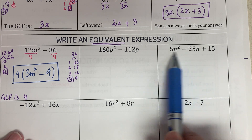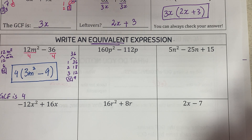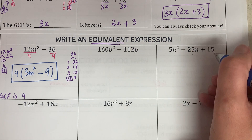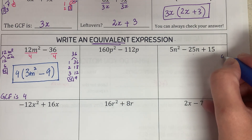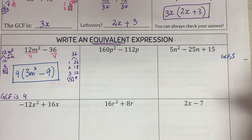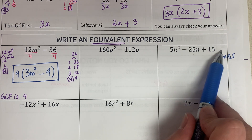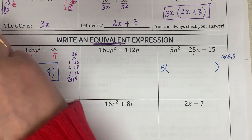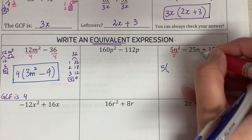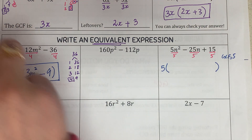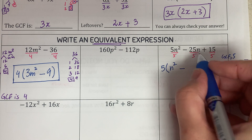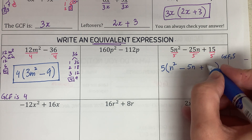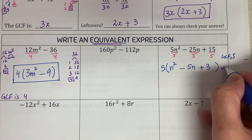For the next one, the greatest common factor is easy to see — all terms are multiples of 5: 5×1, 5×5, and 5×3. So the GCF is 5. For variables: the first term has n squared, the second has n, but the third has no n — so n is not common. GCF is 5. Dividing: 5n squared divided by 5 is n squared, minus 25 divided by 5 is 5n, plus 15 divided by 5 is 3. Answer is 5(n² − 5n + 3).